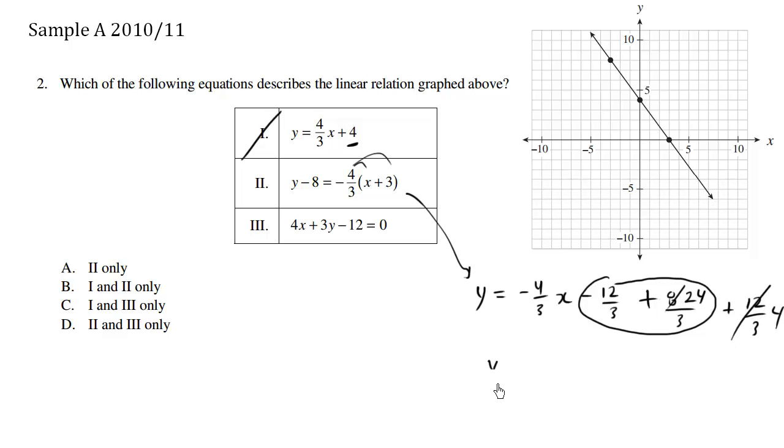So let's rewrite it one more time here. We have negative 4 thirds x plus 4. So this here is a negative slope, which kind of makes sense. And this here is an intercept of 4.